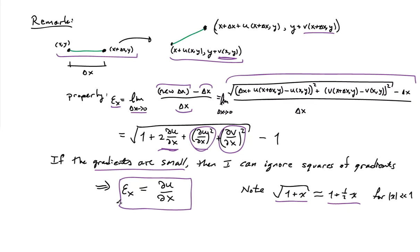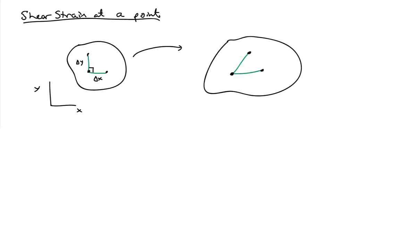Now that we have point-wise normal strain expressions in x, y, and z, let's look at shear strain. To find shear strain at a point, we draw line segments in the x and y directions of lengths Δx and Δy, forming a 90-degree angle. We look at how that angle changes after deformation, giving a point-wise expression for gamma_xy. We can repeat this construction in the yz and zx planes as well.